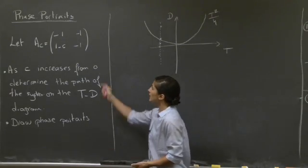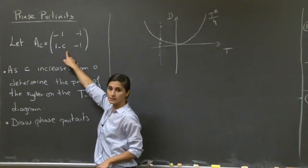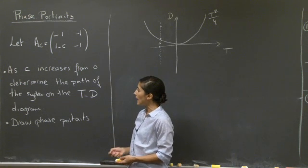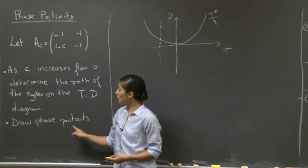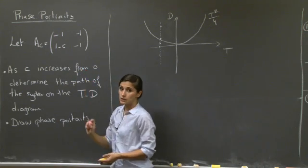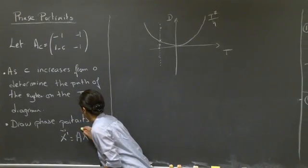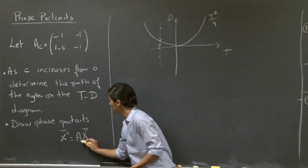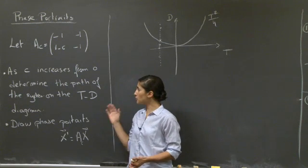Welcome to this recitation on a phase portrait. You're given matrix A, a 2 by 2 matrix with entries minus 1, minus 1, 1 minus C, and minus 1, where C is a constant that we'll be varying. As C increases from 0 to other positive values, determine the path of the system on the trace-determinant diagram, and draw the phase portraits that correspond to the critical points and their nature. Take a few minutes and work out through this problem.